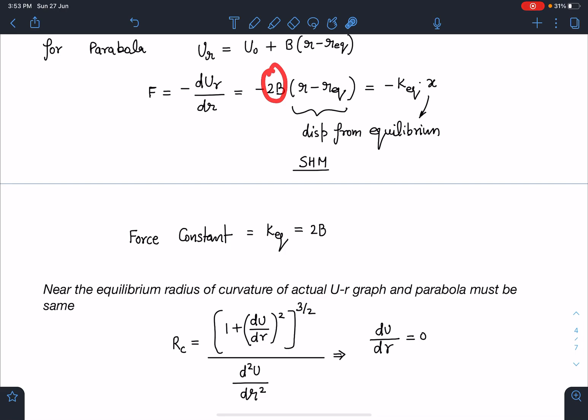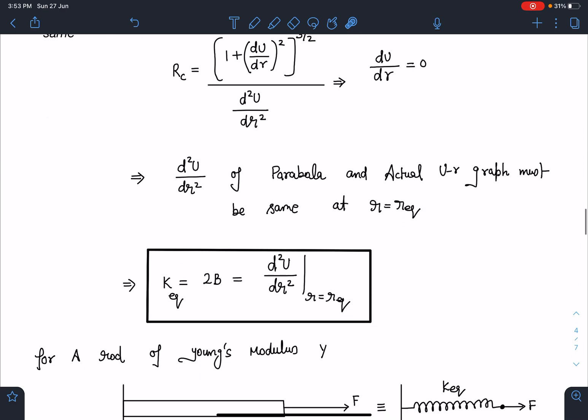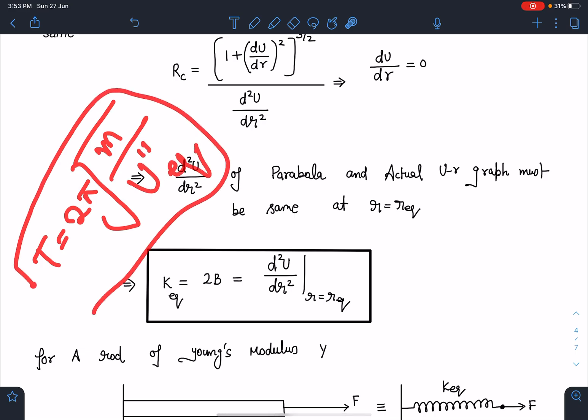I can write here k_equivalent as 2B, which is nothing but d²U/dr² at r_eq. This is the concept you must remember. If any potential function is given, time period equals 2π√(m/k), where k value I can write as U double-dash at equilibrium. This is the same result which we get by using Taylor's theorem. In SHM, it's quite handy.